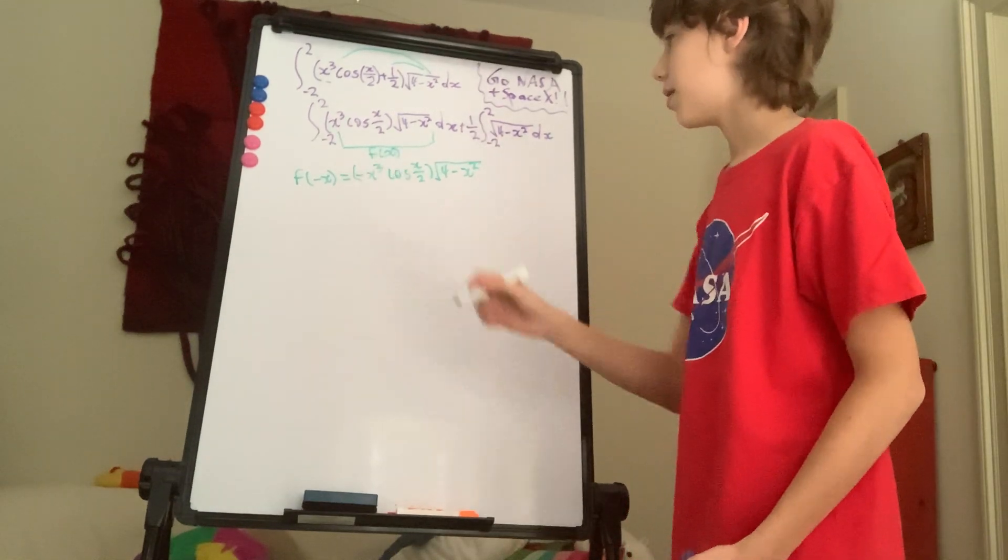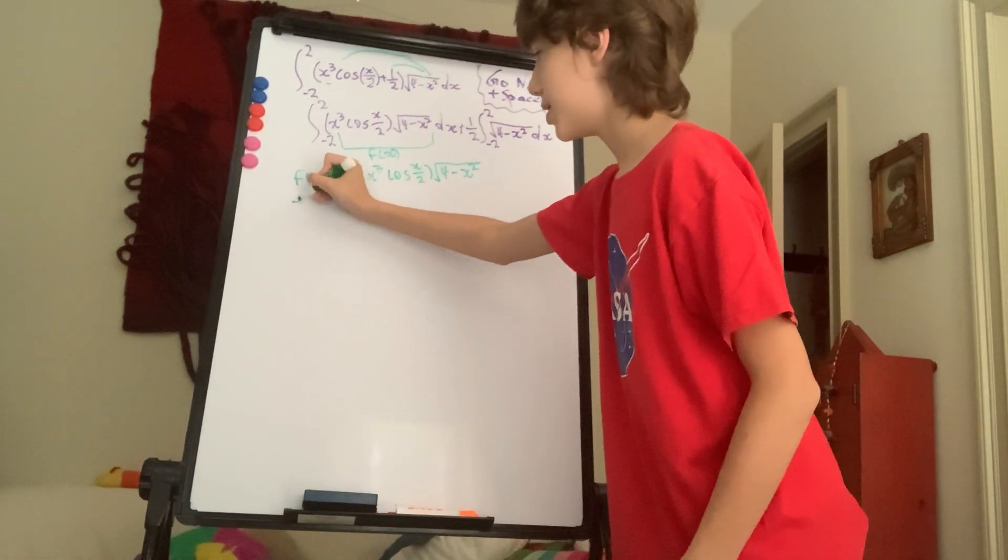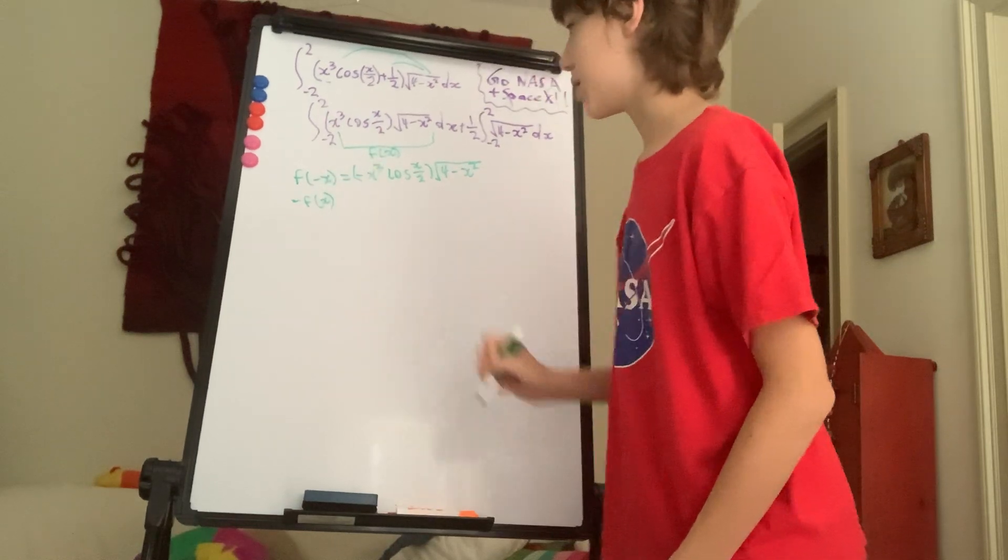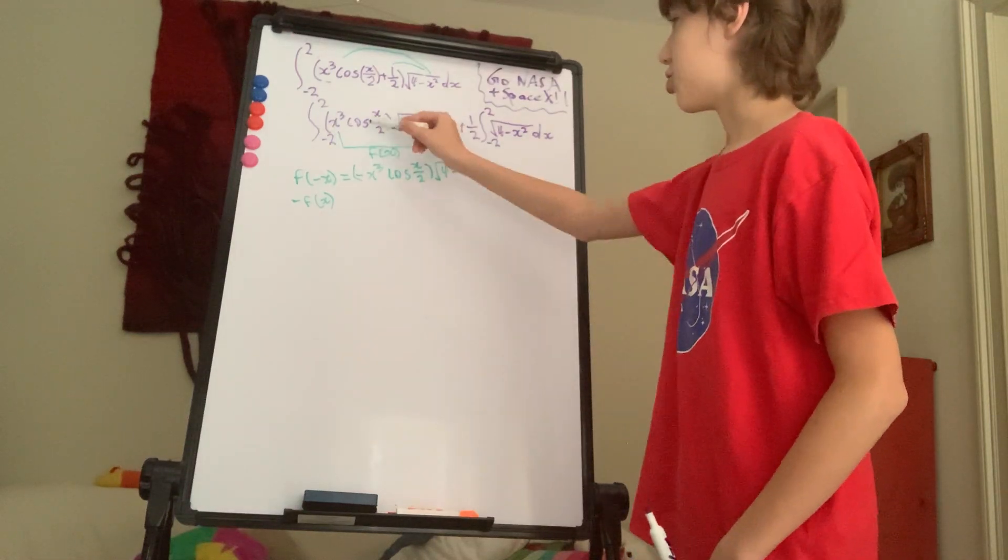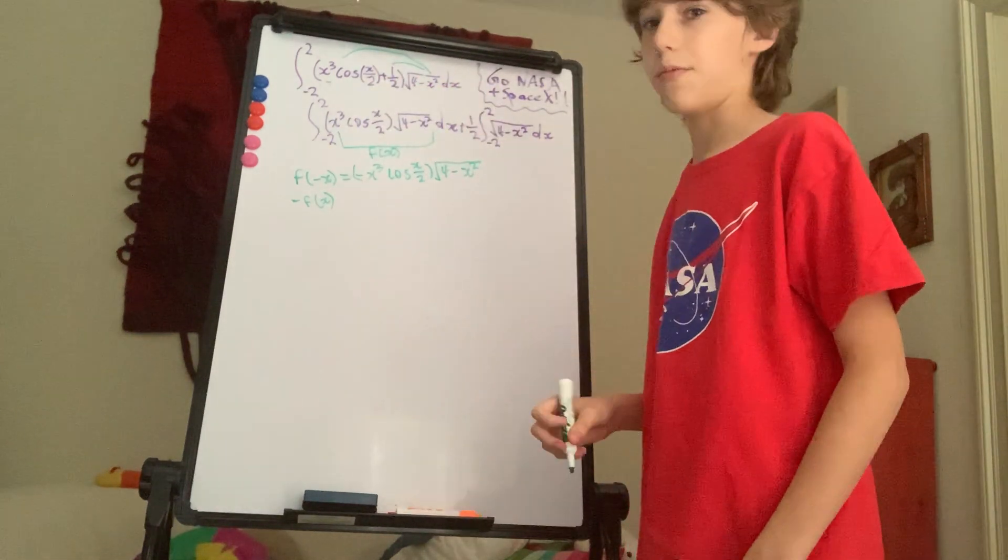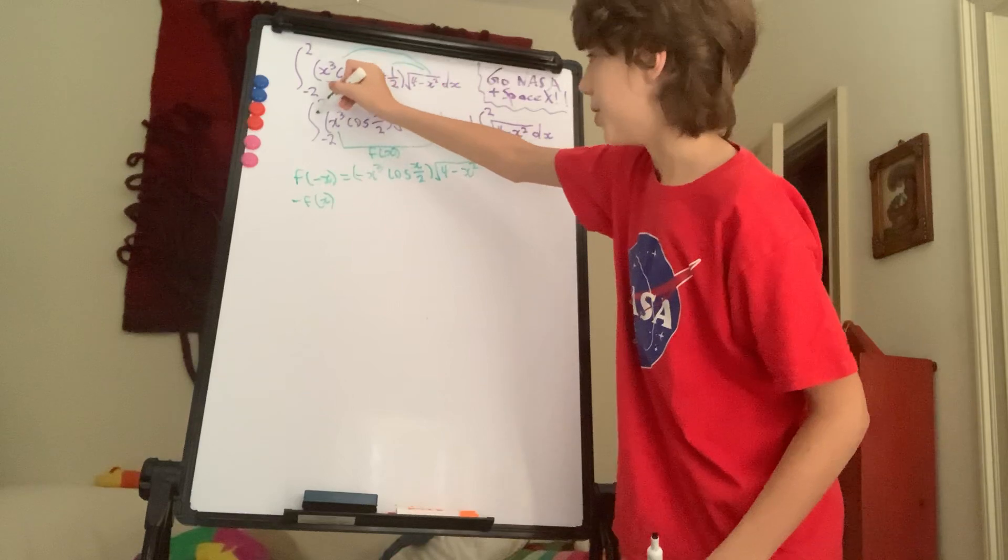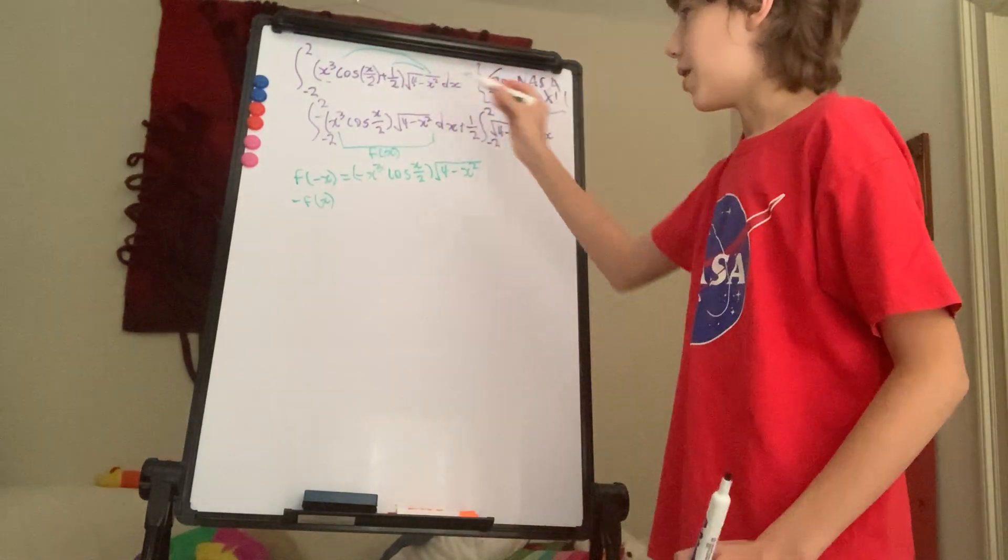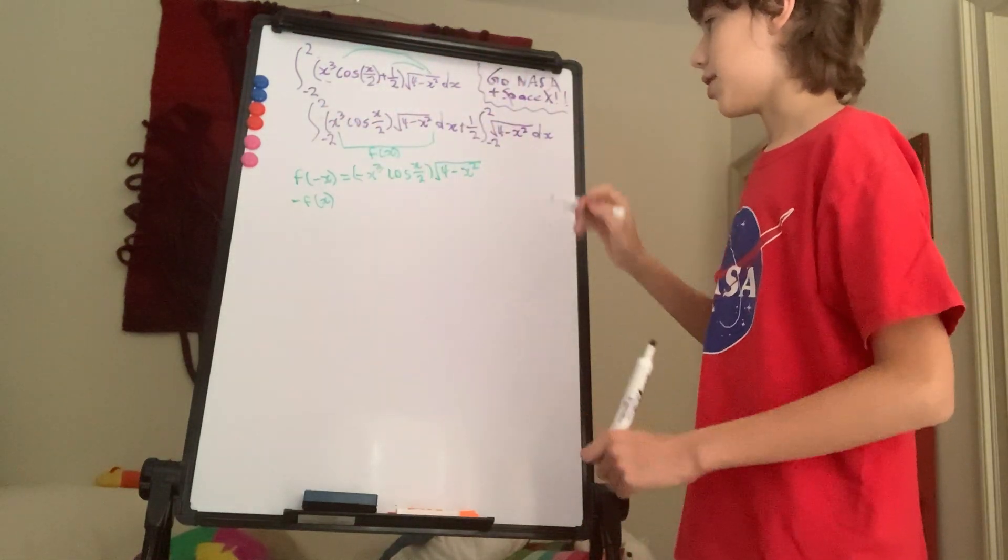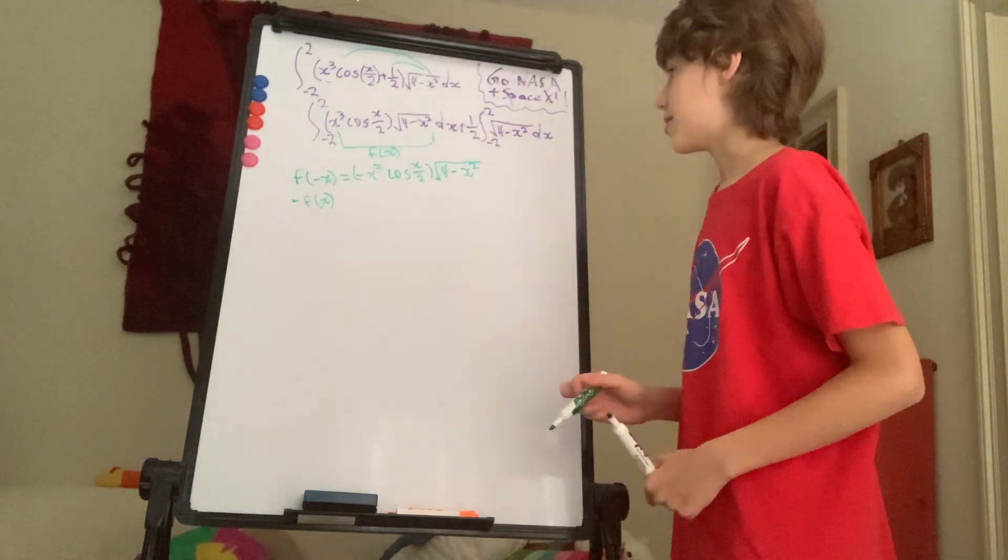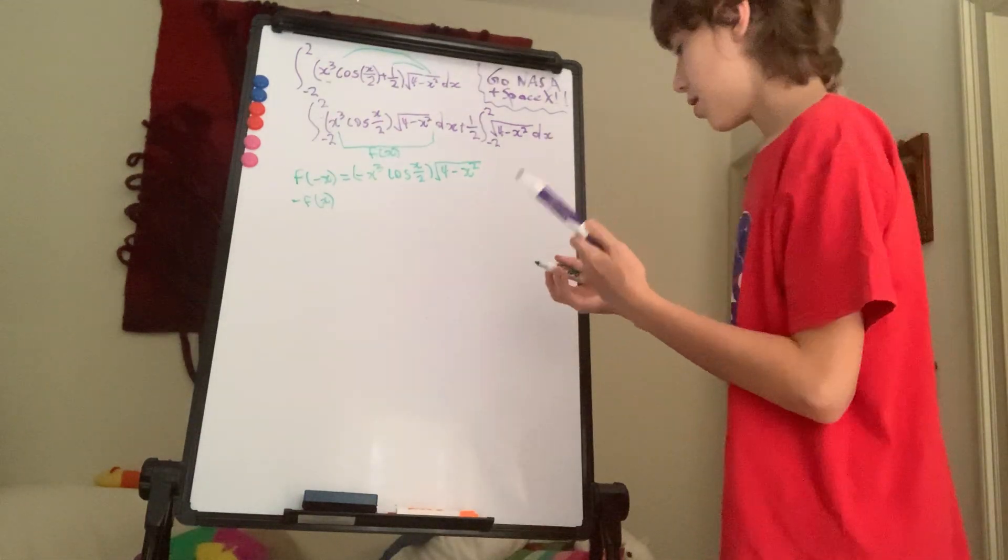So now that we've found f of negative x, then now what we want to do is actually, we want to see if negative f of x is just equivalent. And this is just this function here times negative one. And since this is basically only one term, since it's all just multiplying, this is just going to be equal to a negative that. And we can see that this is actually equivalent to f of negative x, right? And what that means is that this function here is actually an odd function, as I was saying beforehand. And let me make the note here.